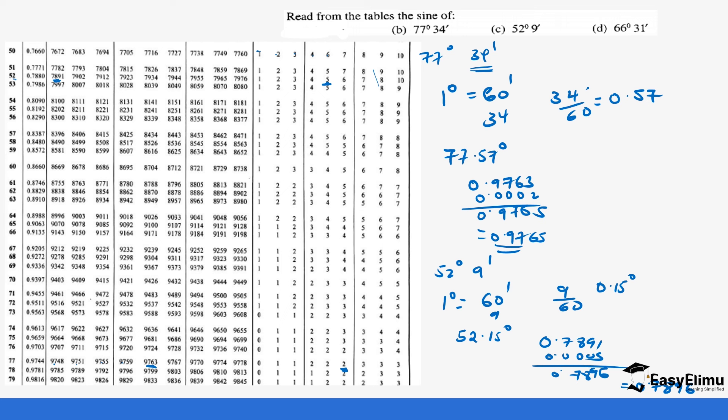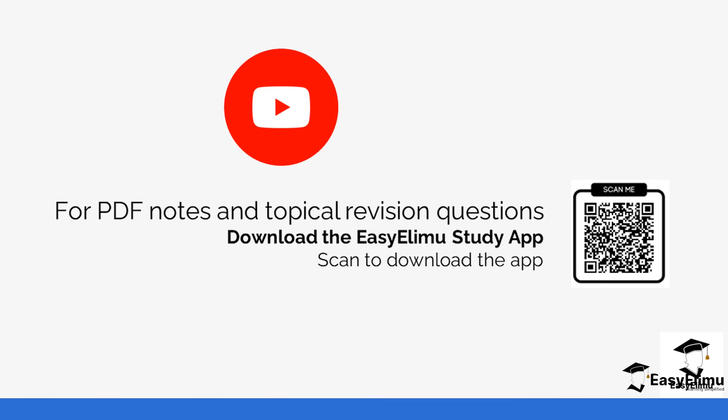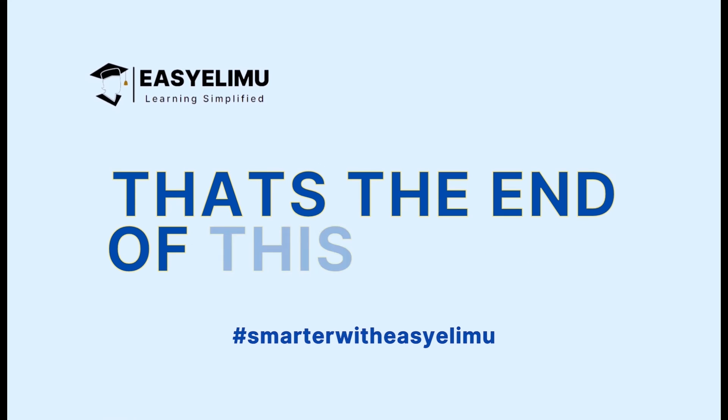It doesn't matter if you've been given your values as degrees or in minutes; you just change them into the same unit. You can work out the last value, 66 degrees and 31 minutes, on your own. That brings us to the end. You can get more revision questions and notes on the app. Keep practicing how to read the tables. See you in the next lesson. Thank you.